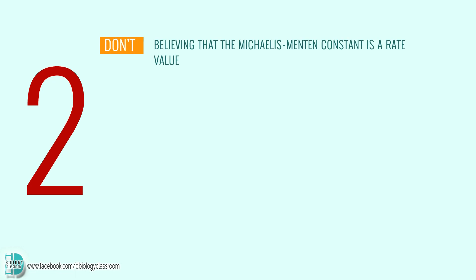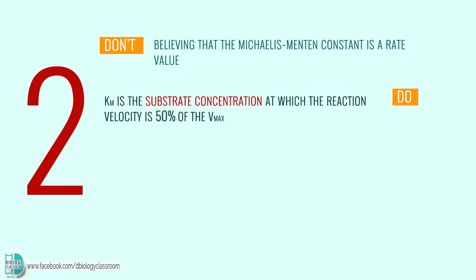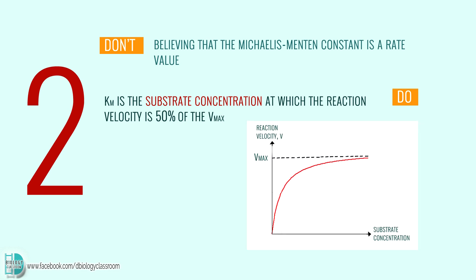Number 2: believing that the Michaelis-Menten constant is a rate value. The Michaelis-Menten constant is the substrate concentration at which the reaction velocity is 50% of the Vmax. So it refers to the substrate concentration, but not the rate.